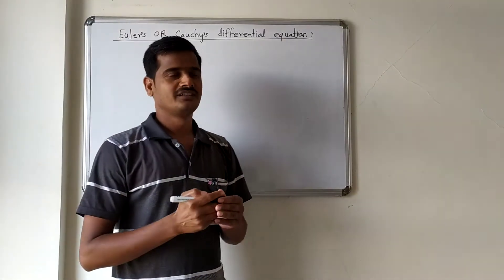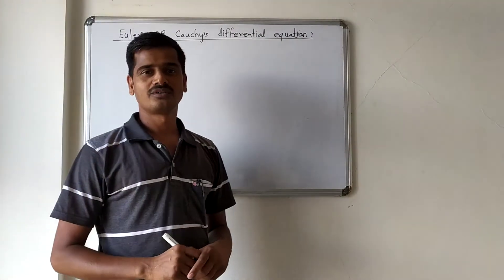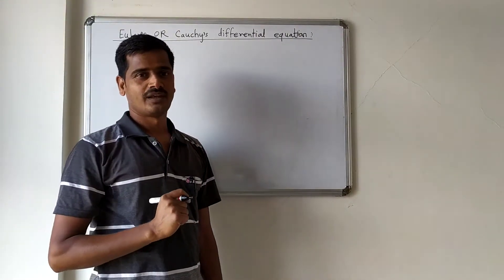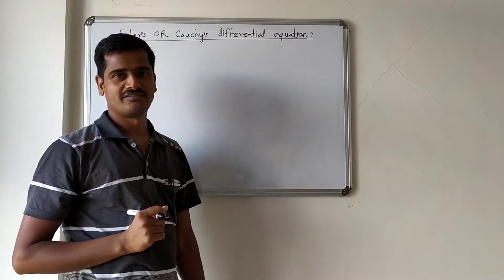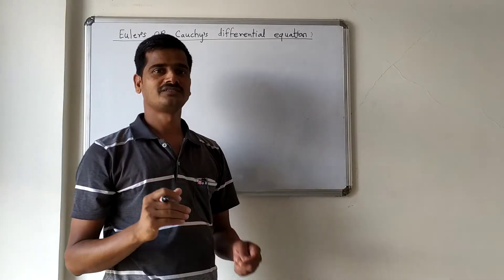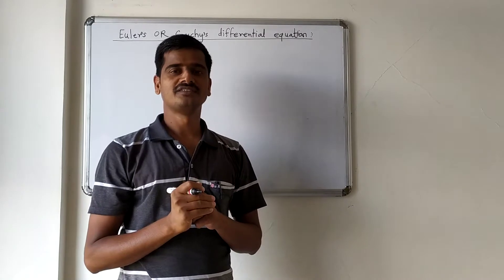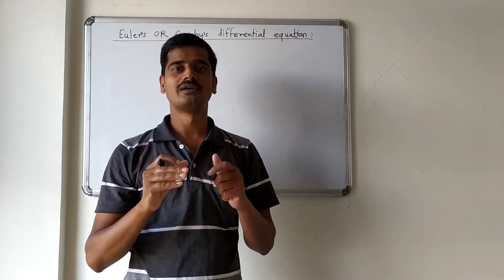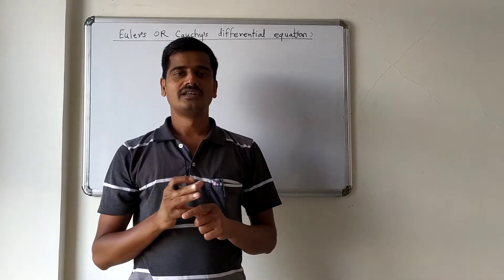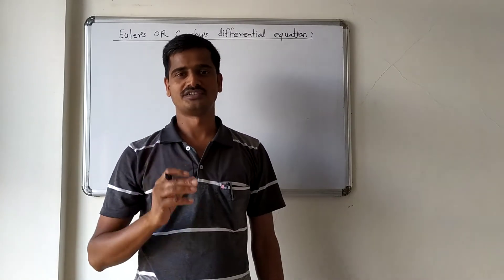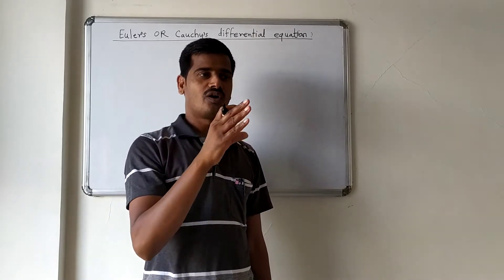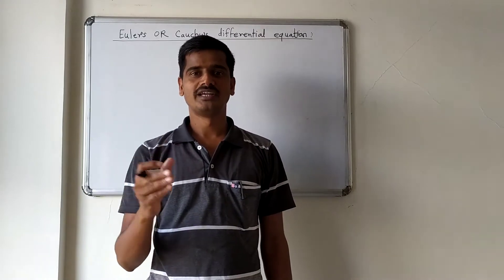Hello everyone. In this lecture you will learn about what is meant by Euler's or Cauchy's differential equation and how to solve such type of differential equations. Basically, Euler's or Cauchy's differential equation is a linear differential equation with variable coefficients. We will use some substitution to transform it into a linear differential equation with constant coefficients, and once we get constant coefficients, we find the complementary function and particular integral using our usual methods.